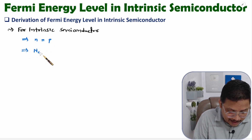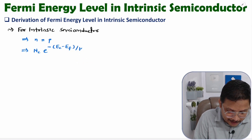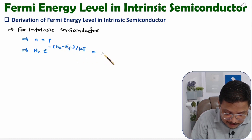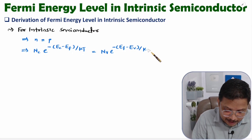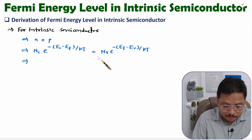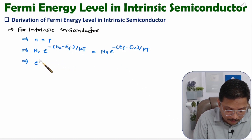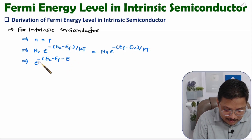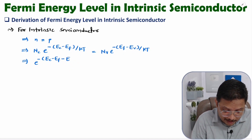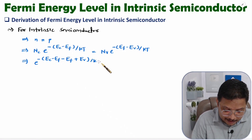Concentration of electrons in the conduction band is Nc times e to the power minus (Ec minus Ef) divided by KT. And concentration of holes is Nv times e to the power minus (Ef minus Ev) divided by KT. Now I will take the exponential terms to one side. So we get e to the power of (minus Ec plus Ev minus 2Ef) divided by KT equals Nv by Nc.